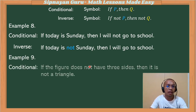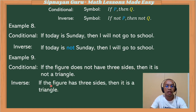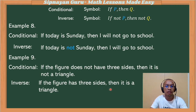Example number nine: if the figure does not have three sides, then it is not a triangle. Its inverse — our hypothesis, the figure does not have three sides, its negation is the figure has three sides. It is not a triangle, its negation is it is a triangle. So therefore, the inverse of this conditional statement would be: if the figure has three sides, then it is a triangle.